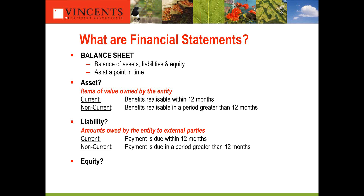Liabilities are the amounts owed by the entity to external parties. Again there's a distinction between current and non-current, where current payment is due within 12 months and non-current is greater than 12 months. With a liability that straddles zero to five years, the portion reflecting the next 12 months goes into current, and non-current is from year two onwards. So you'll sometimes see the same liability listed in both current and non-current.